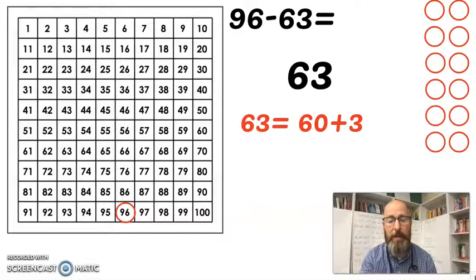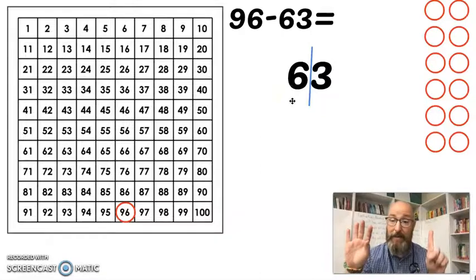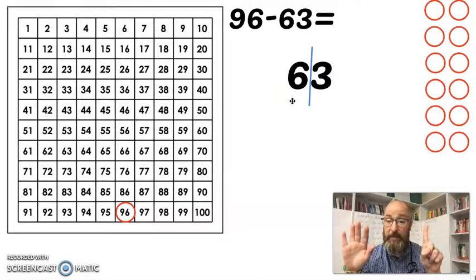Now some of you are probably thinking okay you showed this to me once already. Can you show me how to do it again? Absolutely I can. Let's do it again together. We take 63 and we draw a line between it. We have two sides. We have the ones side and the tens side. This tells me how many tens I have. I have 6. Count by tens six times.